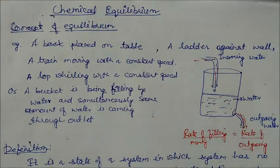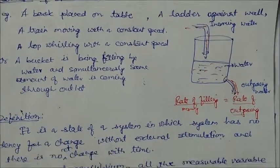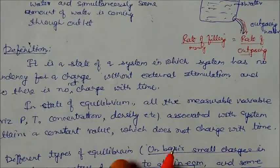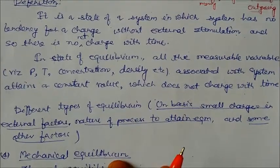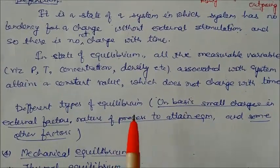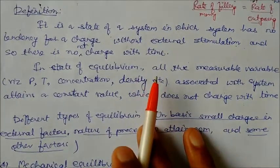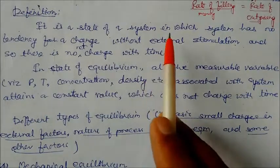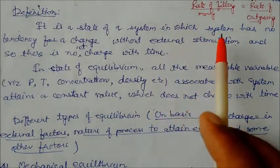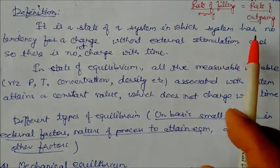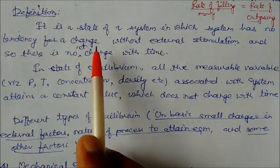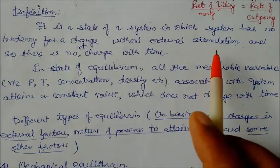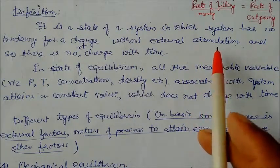So let us see the application of this in chemistry. What is the basic definition? Equilibrium is a stage of a system in which the system has no tendency for change without external stimulation.